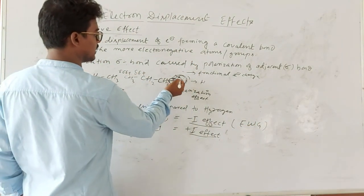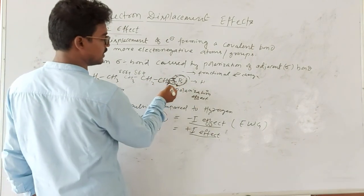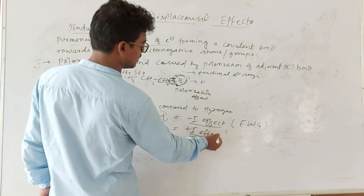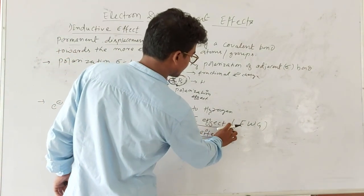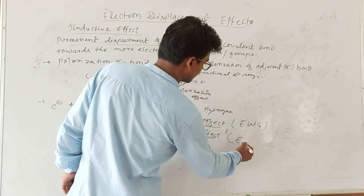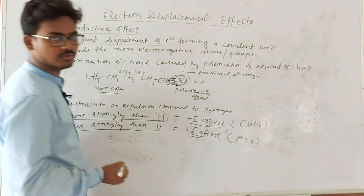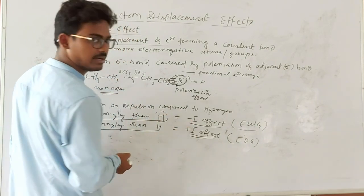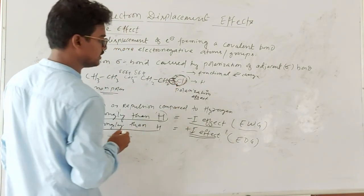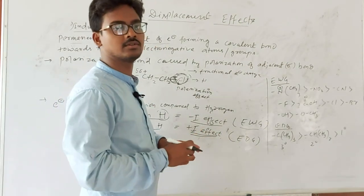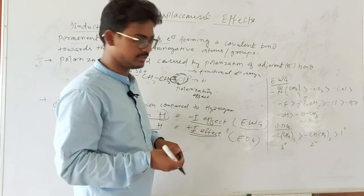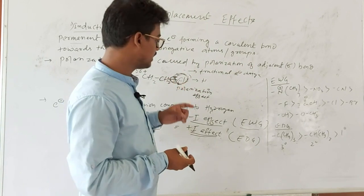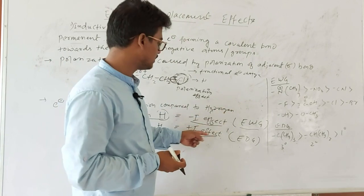Groups with the tendency to donate electrons or repel electrons less strongly than hydrogen are considered electron-donating groups and show the +I effect. Groups that attract electrons more strongly than hydrogen are electron-withdrawing groups and show the –I effect. Electron-donating groups also show the +I effect.